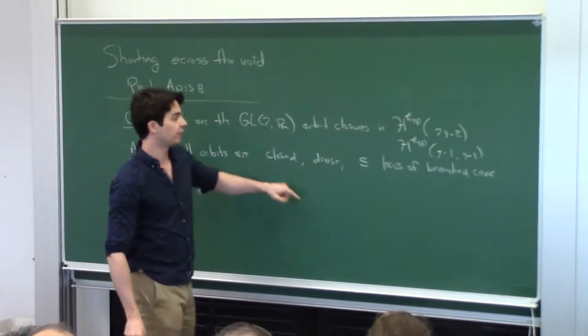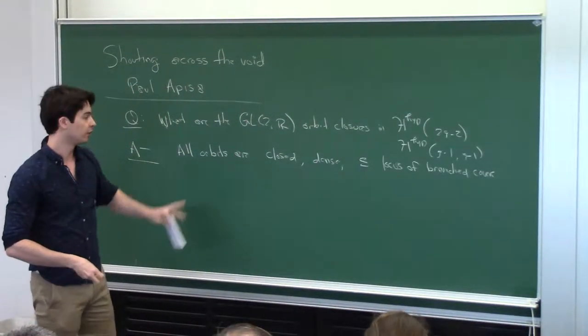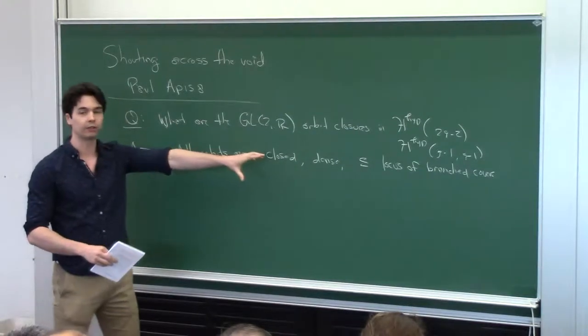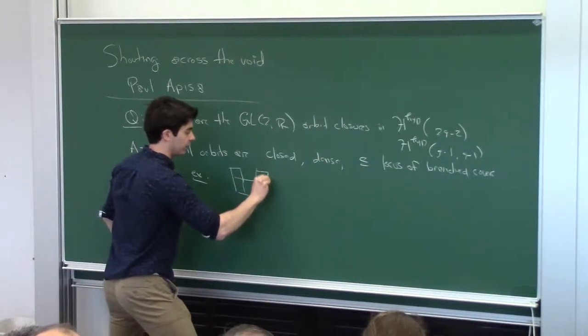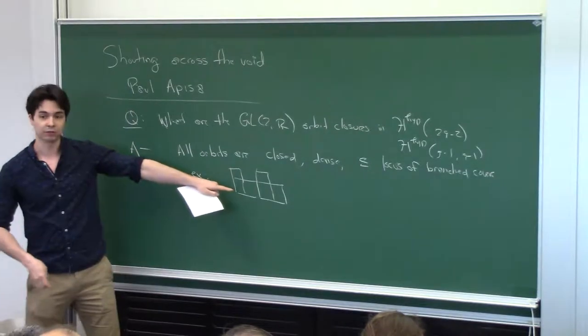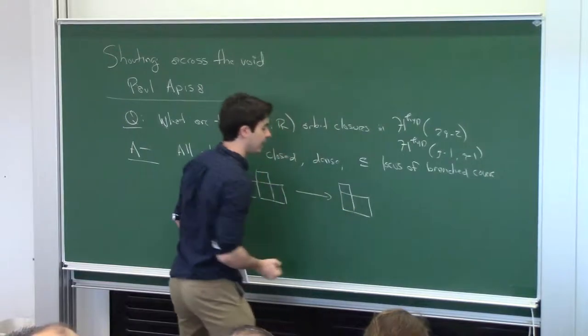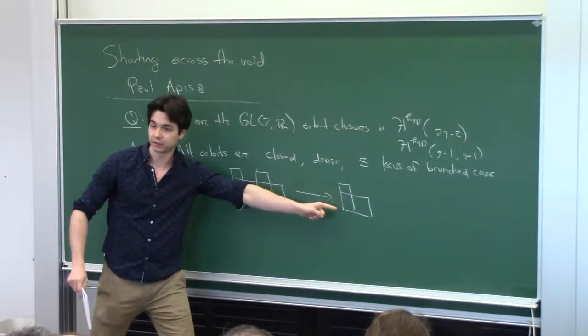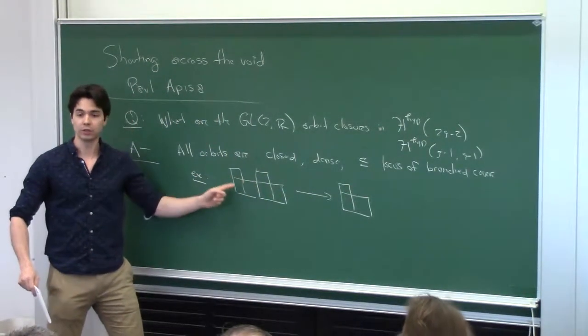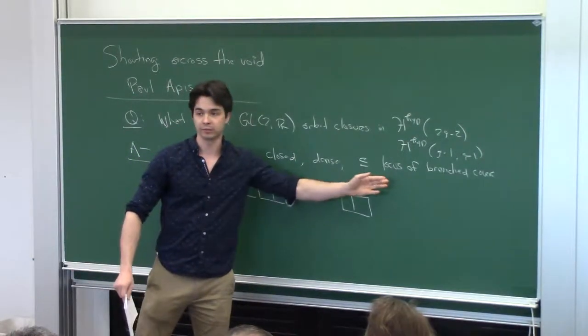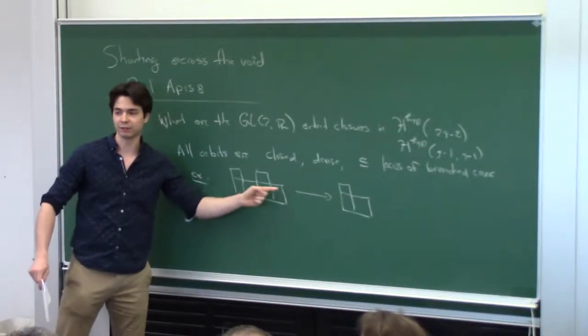So I don't want to define what it means to be contained in a locus of branch covers any more than to just give a picture right now. So if we have some sort of Riemann surface with a holomorphic one-form, and it contains a map down to a lower genus Riemann surface so that the flat structure is being done by pulling back the flat structure downstairs, then we'll say that you're contained in a locus of branch covers. So this picture contains all the information that I want to explain.